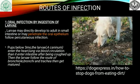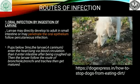In pups below 3 months of age, the larvae can enter the heart or lung through portal circulation, then enter the intestine after being coughed up. The larvae follow the route of tracheal migration through the bronchi and bronchioles and get mature.